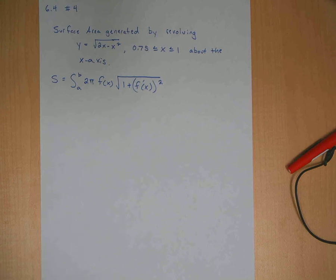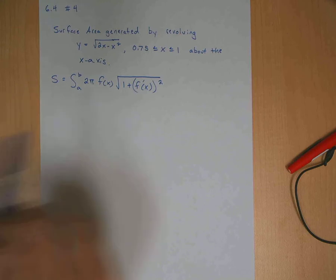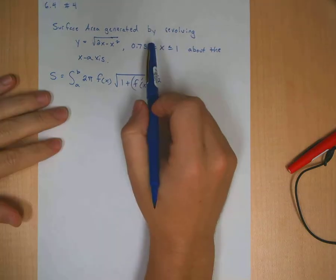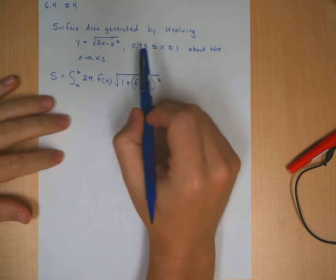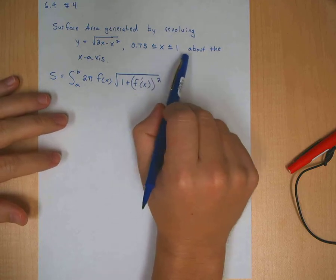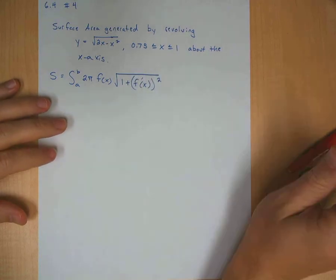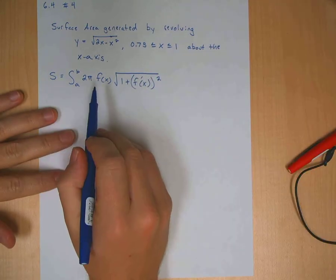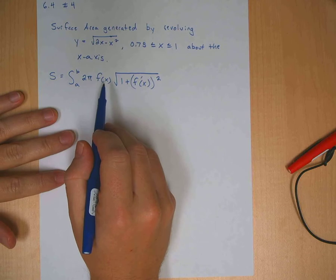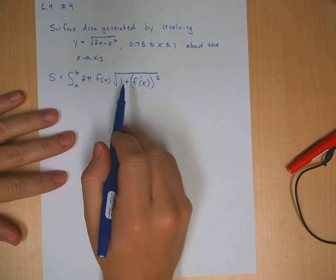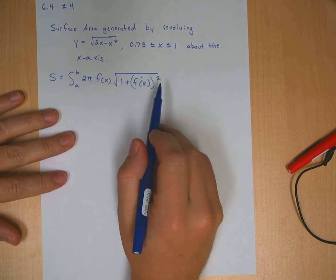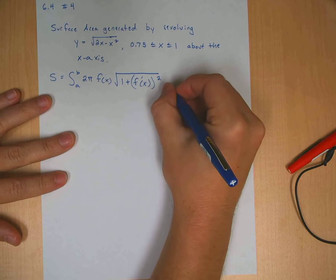On this problem we have a surface area problem — the surface generated by revolving y equals square root of 2x minus x squared, with limits 3/4 to 1, about the x-axis. The surface area formula is 2π times f(x) times the square root of 1 plus f prime of x squared, dx.